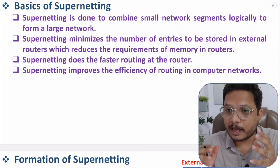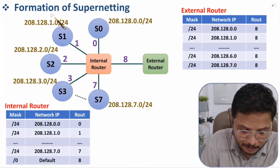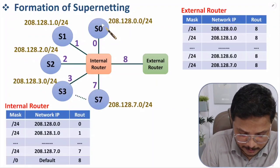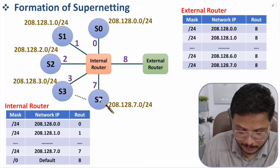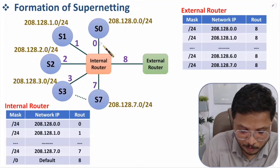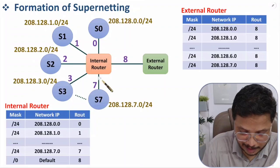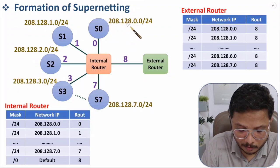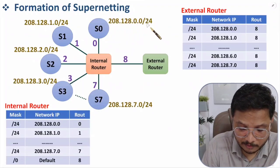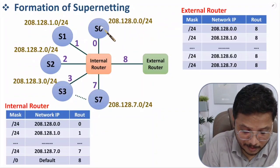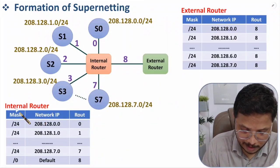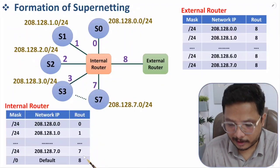Let me explain the basic scenario for supernet formation. We have subnets S0, S1, S2, S3 up to S7 — eight subnets connected to an internal router via interfaces 0 through 7. S0 has network ID 208.128.0.0/24, and the /24 explains the size of the mask. The IDs for S1 through S7 are also given.